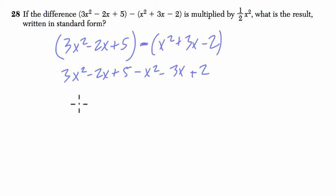So we have 3x squared minus x squared, that's 2x squared. Negative 2x and negative 3x is negative 5x, and 5 plus 2 is 7.